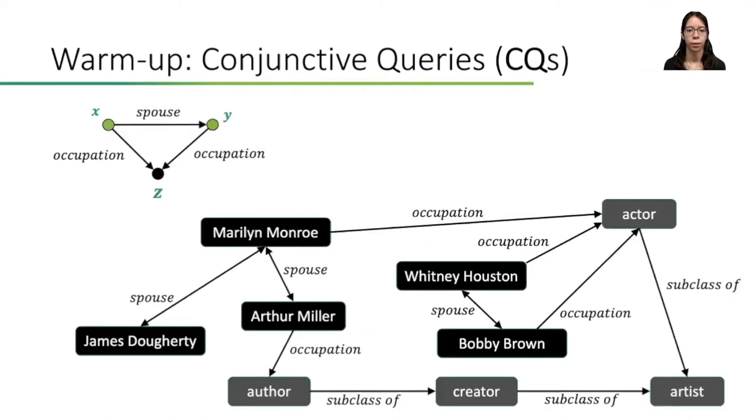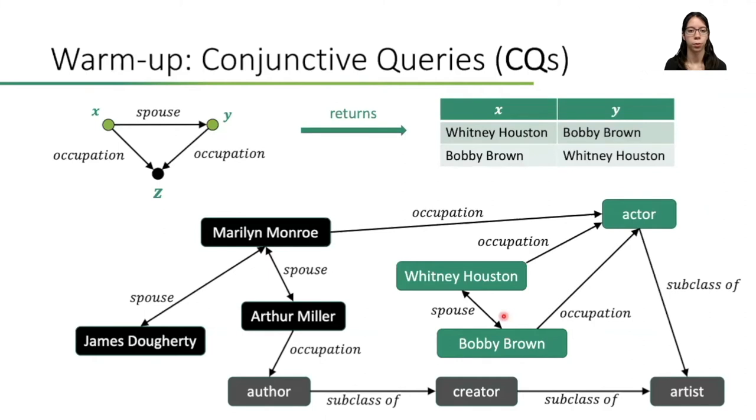If you now want to evaluate the query on a knowledge base, we have to check if we can match this pattern in the knowledge base. We will find this pattern here with Whitney Houston and Bobby Brown as spouses, since they both have the same occupation actor. And as the spouse relation is symmetric, both Whitney Houston and Bobby Brown can be the X variable, thus the query will return two outputs.